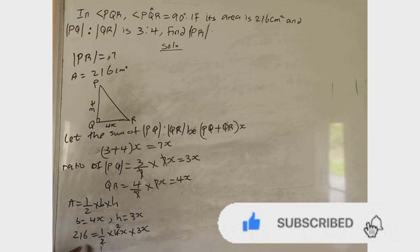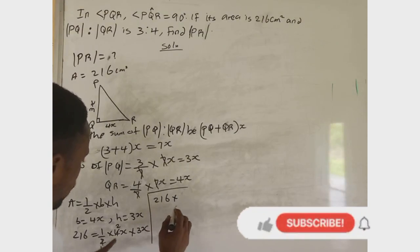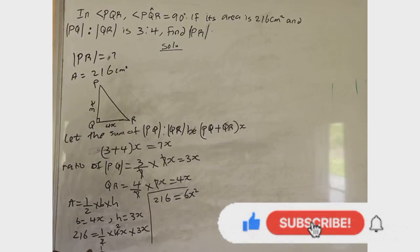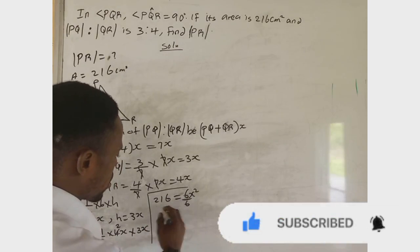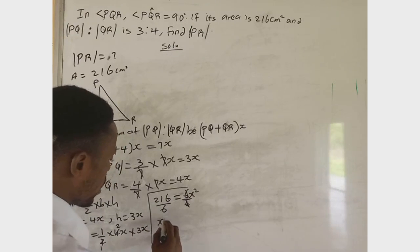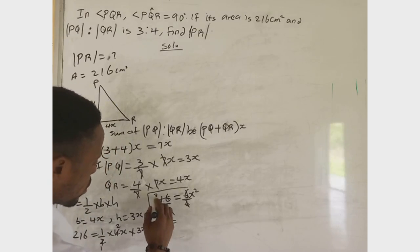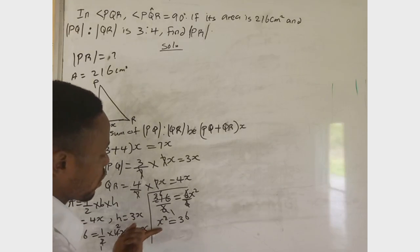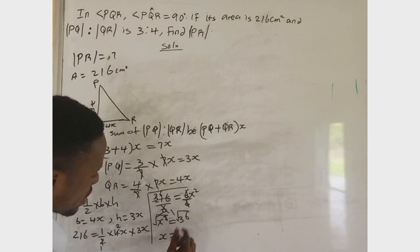So we have 216 equals 6S². Let's divide both sides by 6. S squared equals 216 divided by 6, which gives 36. To find S, we take the square root of both sides. S equals the square root of 36, which gives us S equals 6.